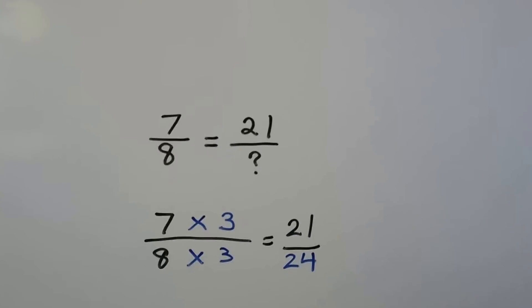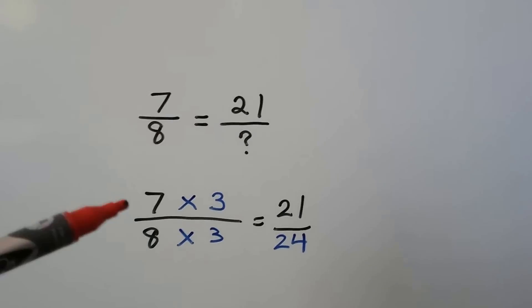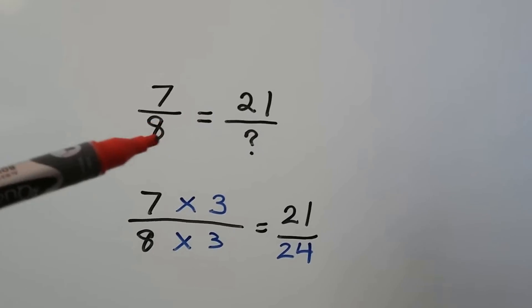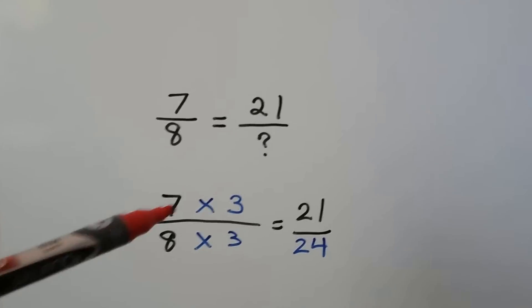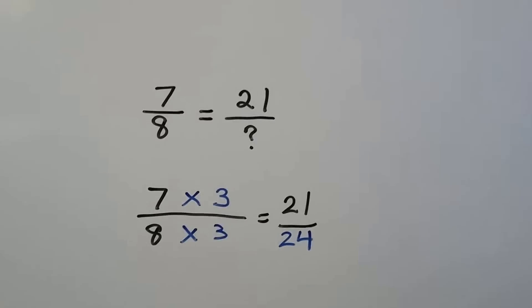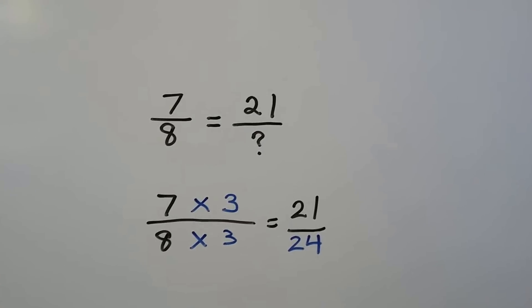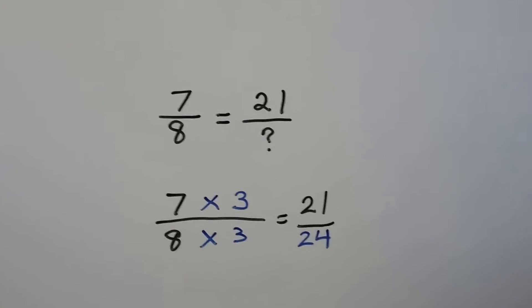7/8 is equal to 21 somethings. So 8 needs to be multiplied by 3 just like the 7 was to get the 21. We get a 24. This is pretty easy and straightforward.